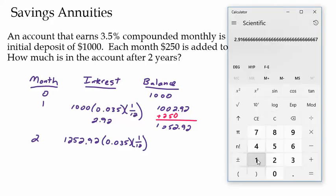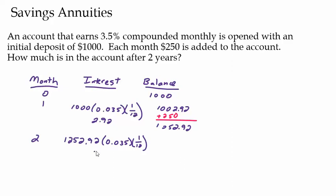So for the next month, I'm going to take $1,252.92 times 0.035 divided by 12. And I get $3.65. See, I earned more interest this month. Last month was only $2.92. So now to calculate my new balance, I'm going to add on $3.65 interest that I got, plus the $250 that I am depositing. So my balance going into month three is $1,506.57.